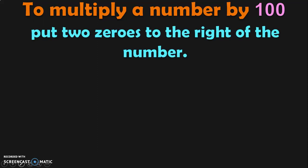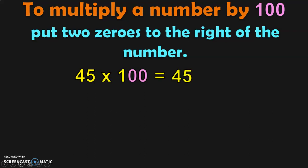Hope you understood multiplication of a number by 10. Let us next see how to multiply a number by 100. You have to put two zeros to the right of the number. Let us understand this with examples. So, 45 into 100 — write down the number 45 and put two zeros to the right of the number. What will you get? 4,500 will be the answer.